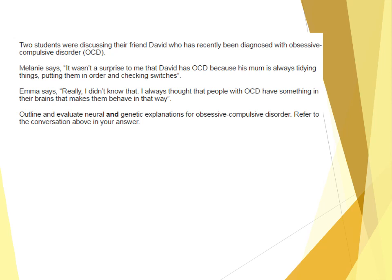In a second paragraph for AO2, demonstrate how this applies to the scenario — for example, Emma suggesting that something within the brain causes OCD maps onto abnormal brain structures or levels of serotonin as neurotransmitters. Then for AO3, evaluate neural explanations: supporting evidence of the basal ganglia being associated with OCD, and SSRIs improving symptoms in 50-60% of cases. Also discuss biological reductionism — reducing OCD to a single neurotransmitter or brain area.